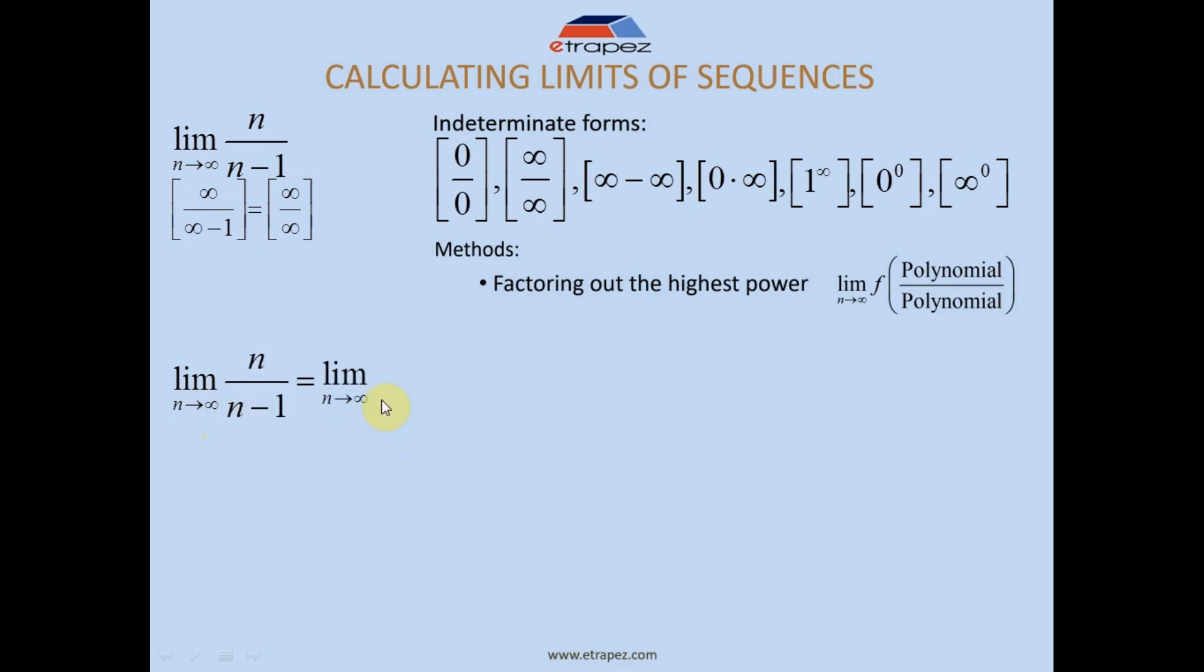The point is that we rewrite the limit on the top and bottom. We rewrite the fraction line. On the top and bottom we factor out the highest powers of n.